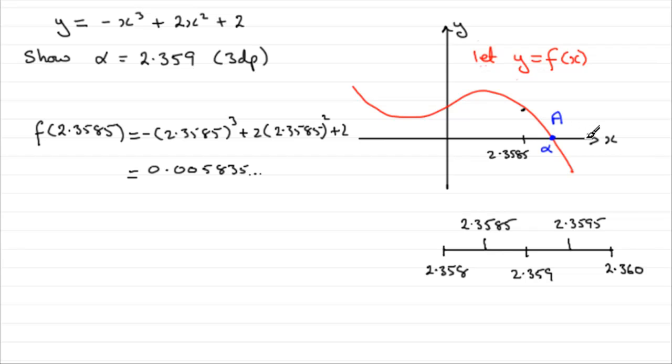Now we're going to take the point 2.3595, and what I'm hoping to find is that it is a negative value close to the x-axis, 2.3595. And if I find that, then I know that there must be a root in this interval.